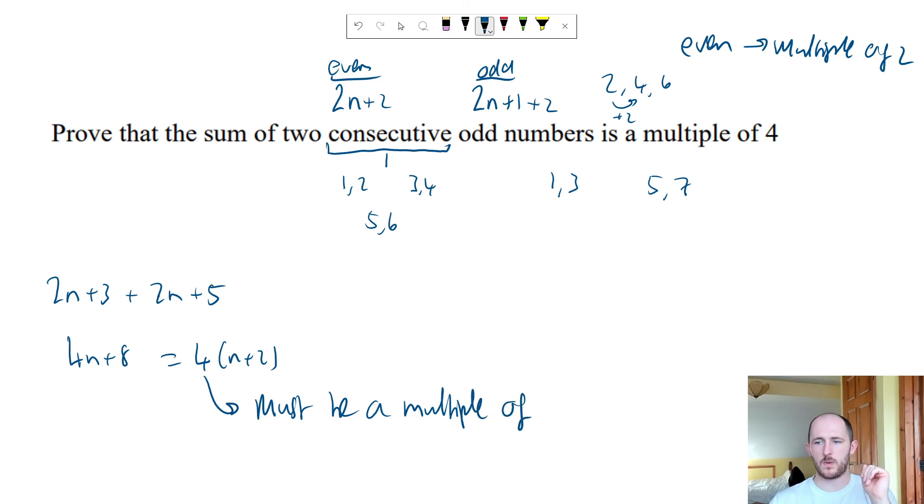And why is that? Well if you think about it if you do 4 times any integer you're always going to get a multiple of 4 right? 4 times 1, 4 times 2, 4 times 3 and so on. How do I know it's an integer? Because it's an odd number. So this is an odd number or n is just a number plus 2 that's still an integer times 4. It's still an integer and it also must be a multiple of 4.